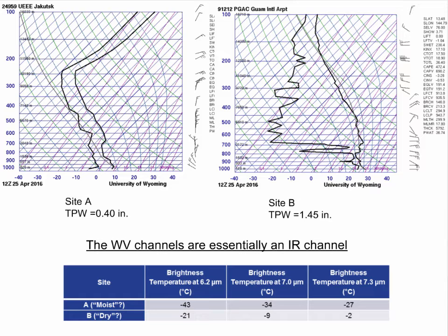Remember that water vapor channels are essentially an IR channel. The brightness temperature is a function of the absolute quantity of the absorbing molecule — in this case water vapor — and the temperature of the tropospheric layer where that moisture resides. Recall there is some contribution from viewing angle as well, since point A is at a higher latitude where the weighting function would peak higher in altitude and therefore colder.